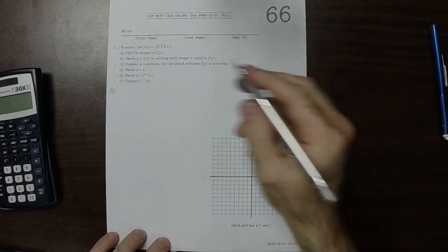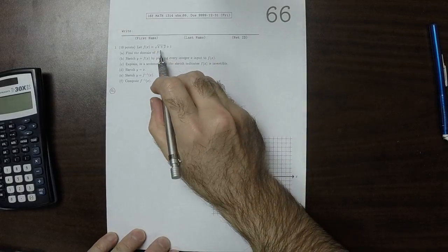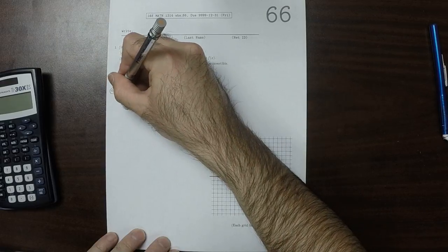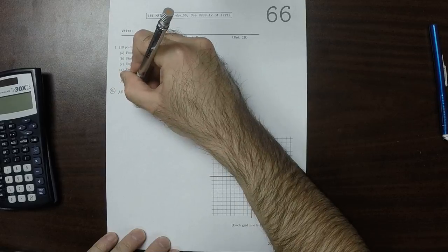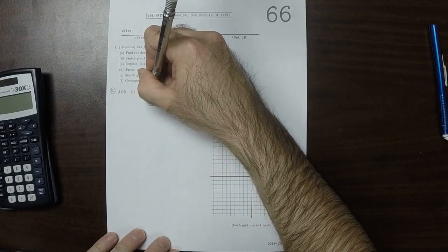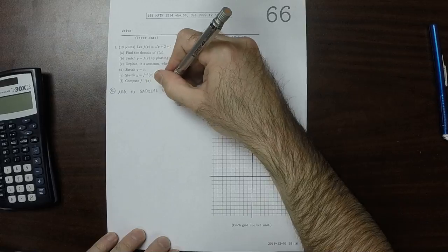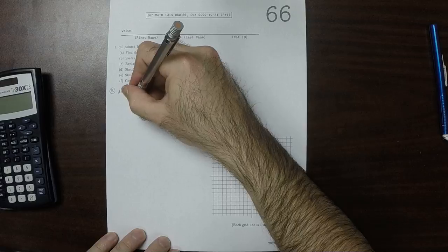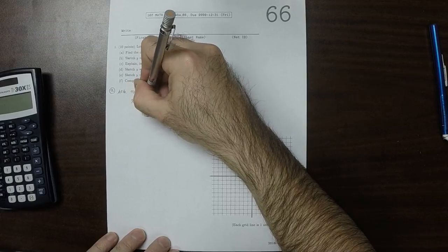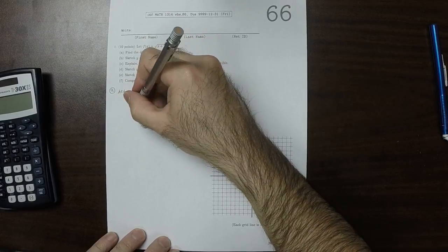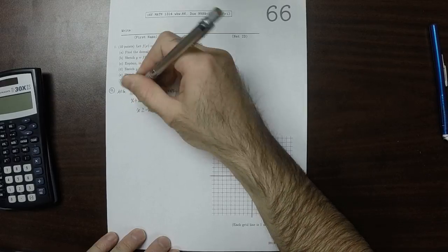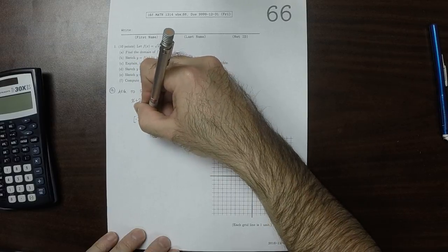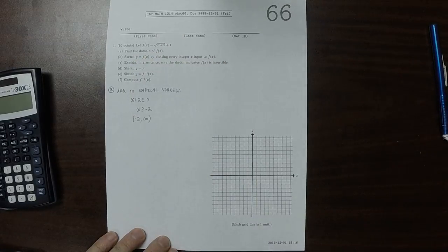Find the domain of F. So the only thing where there's a problem is we need the argument to the radical to be non-negative, which is to say that we need x plus 2 is greater or equal to 0, or if you like, x is greater or equal to negative 2, so negative 2 to infinity. That means that we should not have any drawing further to the left than that point.